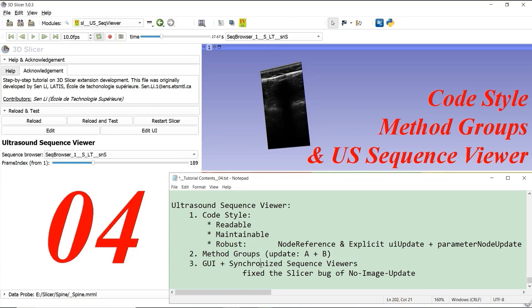In the end, we synchronize two Sequence Viewers and fix the bug of no image update when we change the active Sequence Browser node in the Sequence Viewer given by 3D slicer.